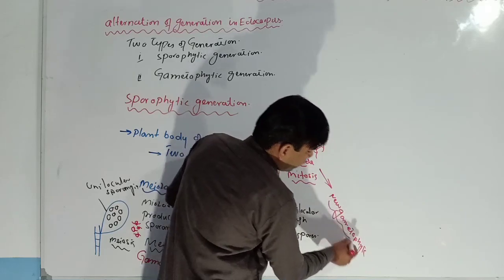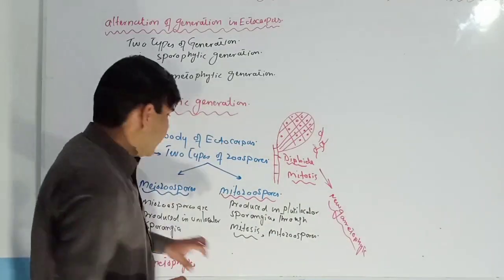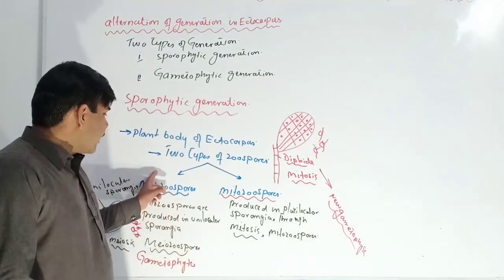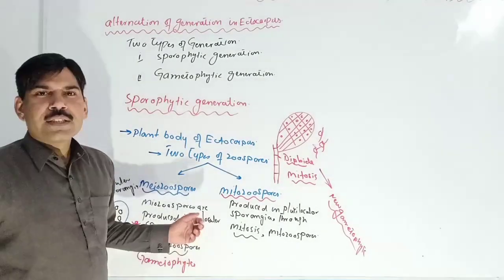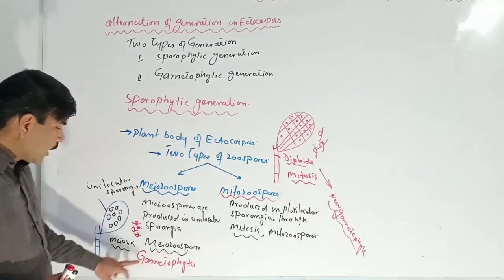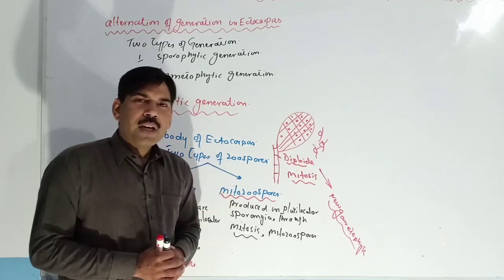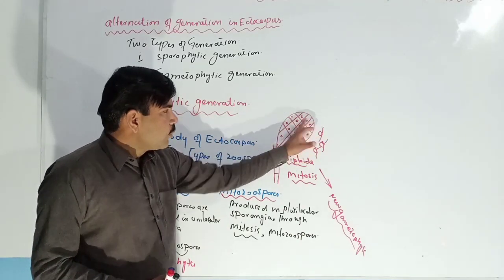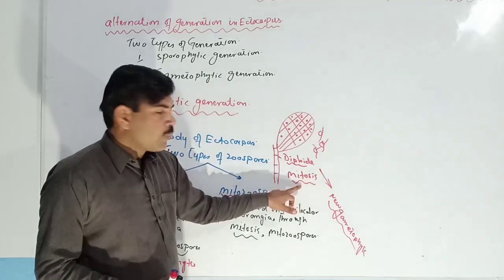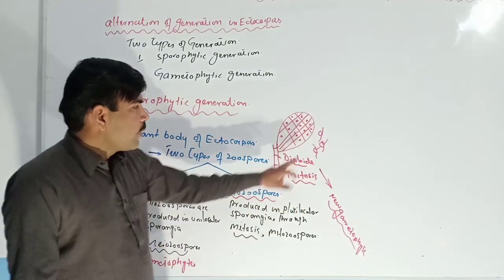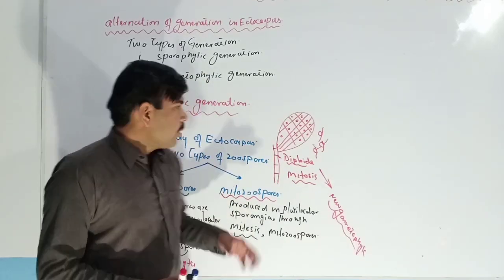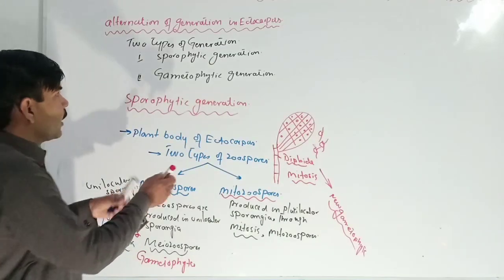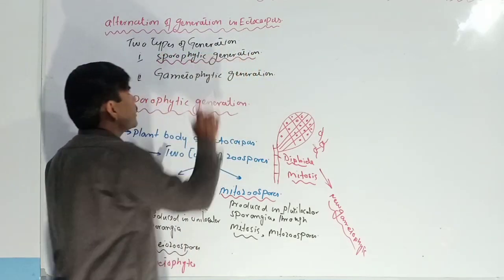These mitozoospores will germinate and produce a new gametophyte. So, the gametophyte is produced in two ways: first, from meozoospores produced in the unilocular sporangia via meiosis, and second, from mitozoospores produced in the plurilocular sporangia via mitosis. Both types of spores give rise to a new gametophyte plant body. This means the sporophyte gives rise to the gametophyte.